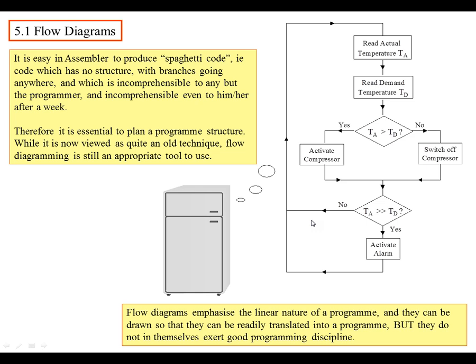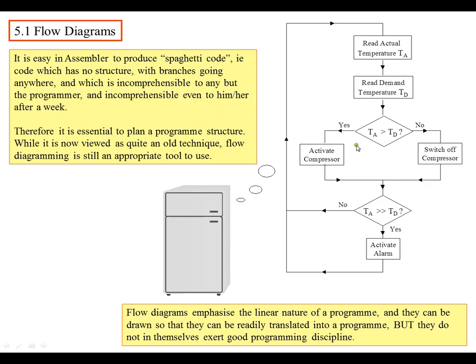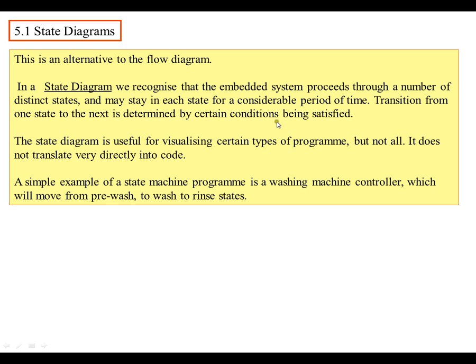Now, there's another type of diagram called a state diagram. Some embedded systems go through a number of distinct states. They may stay in each state for a considerable amount of time. And then they'll transition from one state to another after certain conditions have been satisfied. So in certain systems, a state diagram may be more appropriate. Sometimes when we have a state diagram, we may want to do a combined approach, maybe a flow diagram to describe each state, and then have the state diagram as well. The example we're going to use here is going to be a washing machine.